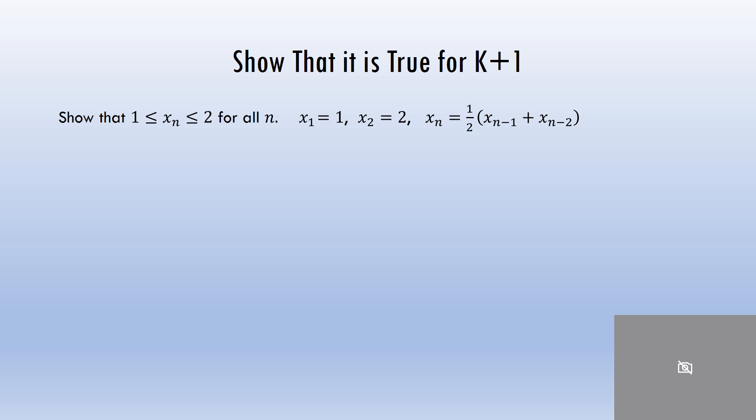My next step is to show, using my inductive hypothesis, that my statement is true for k plus 1. Let's define x sub k plus 1 in terms of the sequence. If I replace n with k plus 1, I have x sub k plus 1 equals one-half of x sub k plus x sub k minus 1. Now let me see if I can use what I assumed before to get to the fact that x sub k plus 1 is between 1 and 2.